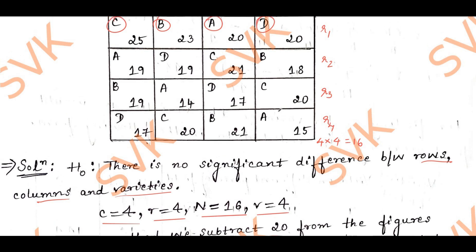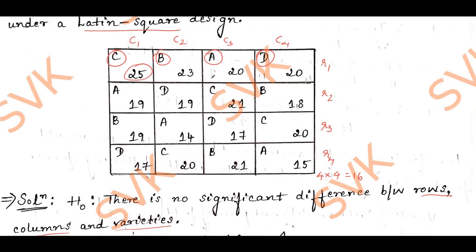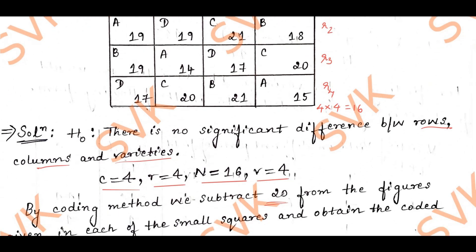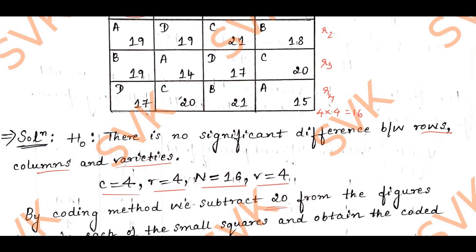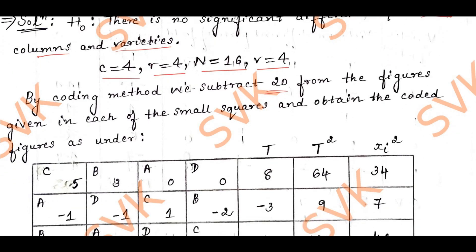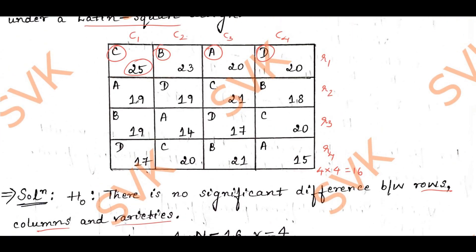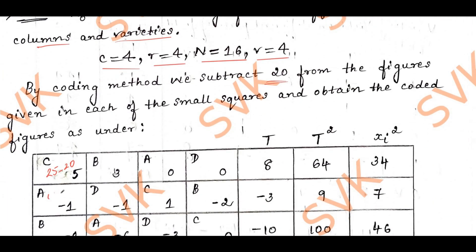Why subtract 20? The highest value is 25, so all values are less than 25. If I take the average of the highest and least values, it comes to around 20. So I am subtracting in terms of 10s, and for that reason I have chosen 20. For the first row: 25 minus 20 = 5. The second value: 19 minus 20 = minus 1. Similarly, I go on finding all values up to the 16th observation.